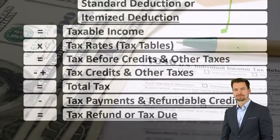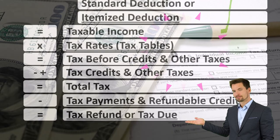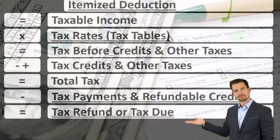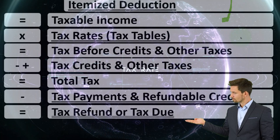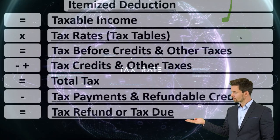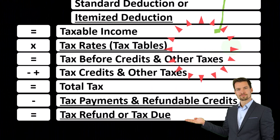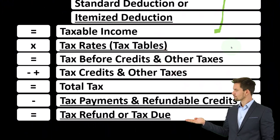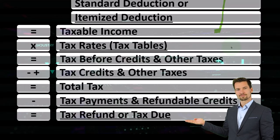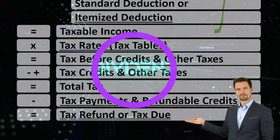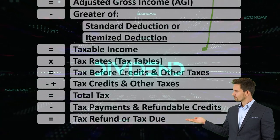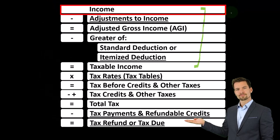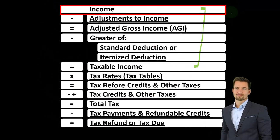Remember that actually calculating the tax is quite complex because we have a progressive tax system, which means that one taxable income number might be calculated using multiple different rates. Now we're adding a level of complexity in that we could have different tax rates for capital gains — and we may also have different tax rates for dividends, for example. So, why might we have different tax rates for capital gains?